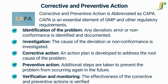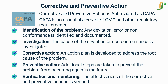The CAPA process is essential in the pharmaceutical industry to ensure that deviations and non-conformances are addressed promptly and effectively. This helps to maintain the quality and safety of pharmaceutical products and to comply with regulatory requirements. The CAPA process also helps to identify opportunities for continuous improvement and to prevent future deviations and non-conformances.